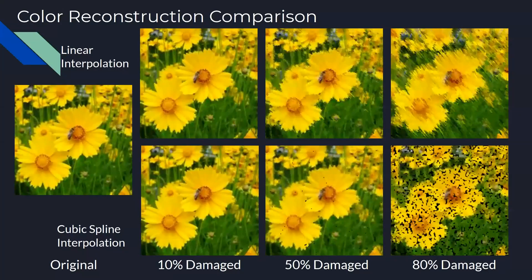Here you can see the linear interpolation and the cubic spline interpolation reconstructions for the color image. With the color image you can see a lot more of the blurring and smearing effect that the linear interpolation method brings. Again, with the cubic spline interpolation, the resolution and clarity is pretty well kept even at 80 percent damage, and again you could run cubic spline interpolation on that 80 percent damaged reconstructed photo to bring back more definition.